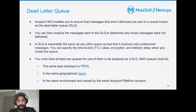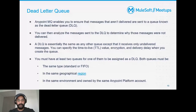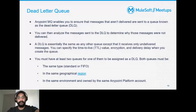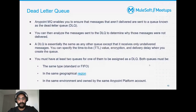The most beautiful benefit of Anypoint MQ is the circuit breaker capability, which other JMS brokers don't offer. It's a great relief for developers working on error handling and reliability patterns.